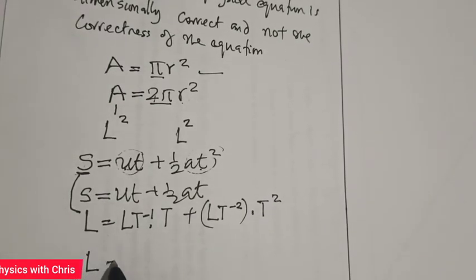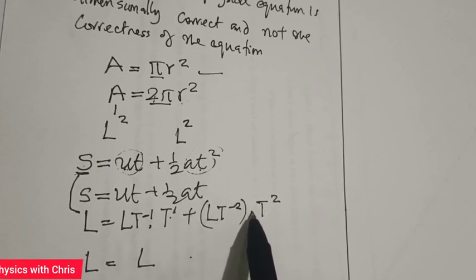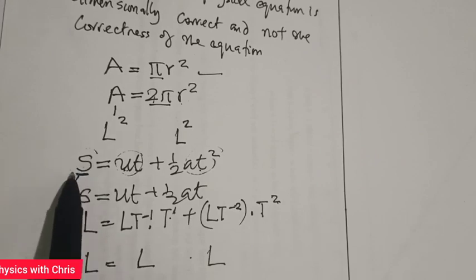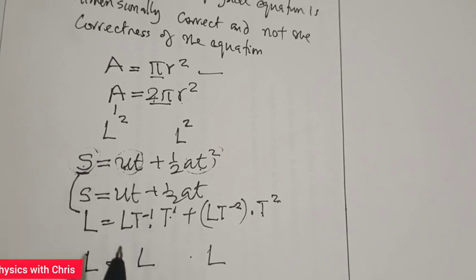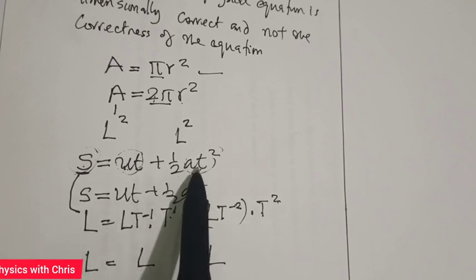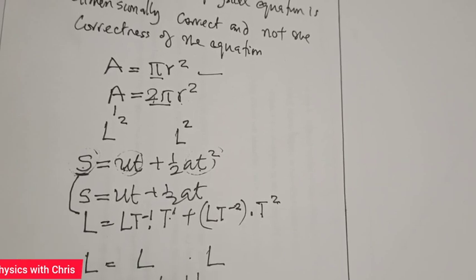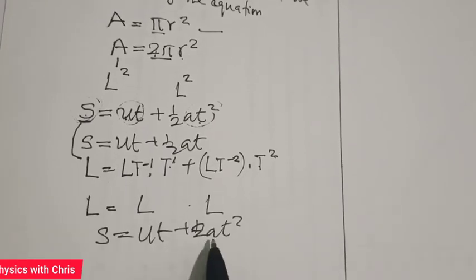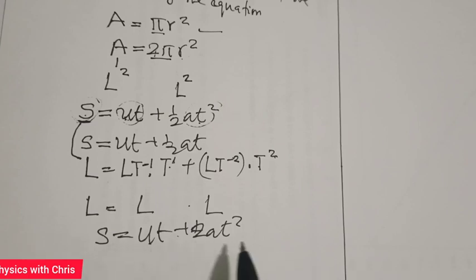When you evaluate this, you discover the dimension of ut gives L, and the dimension of LT⁻² multiplied by T² also gives L. Since the dimension of displacement equals the dimension of ut and also equals the dimension of at², this equation is dimensionally correct. Note that s = ut + 2at² is also dimensionally correct, but the correct expression is actually ½at², not 2at².